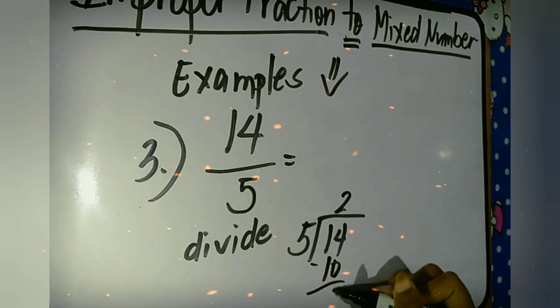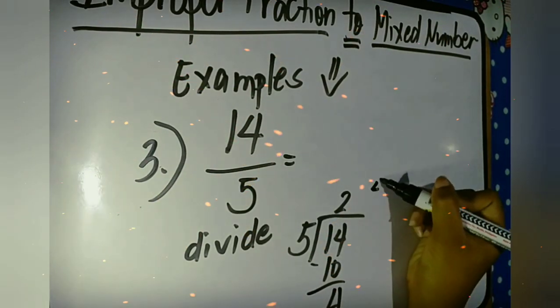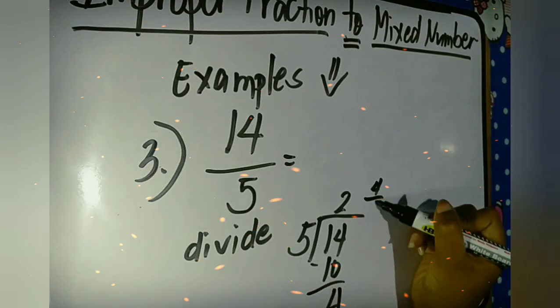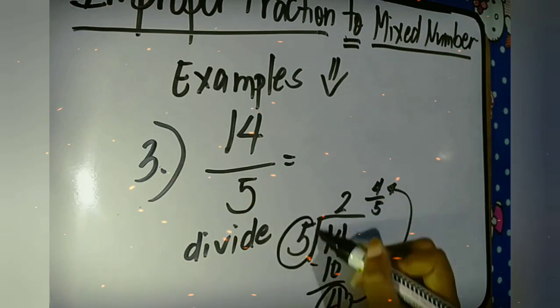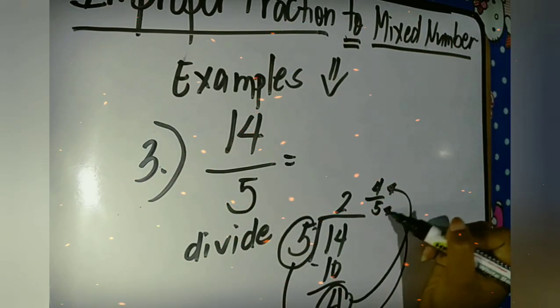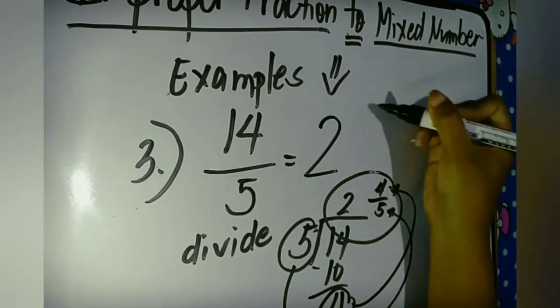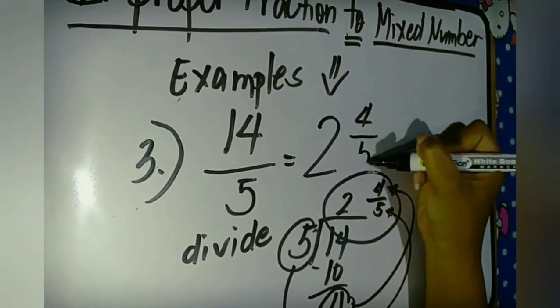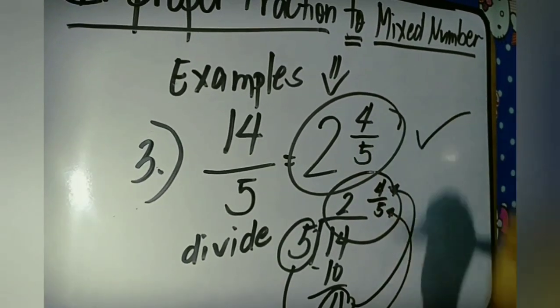2 times 5, 10. And 14 minus 10, the answer is 4. And that 4 will become our numerator and the remainder. And 5 will become the denominator in our remainder. So the final answer for 14 over 5 is 2 and 4 fifths. And that's our mixed number.